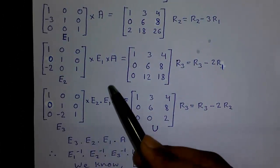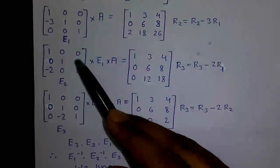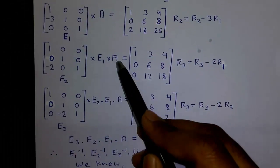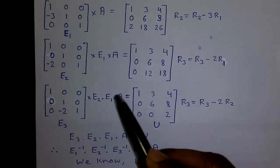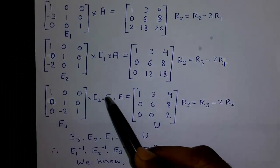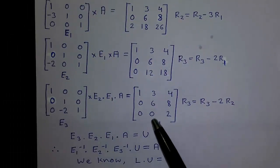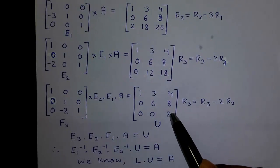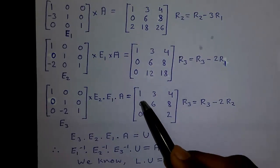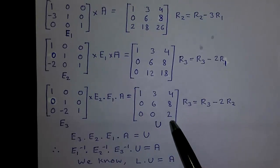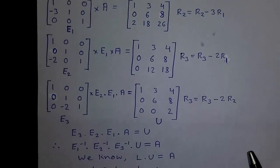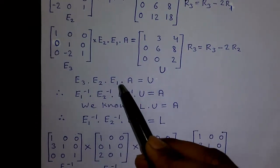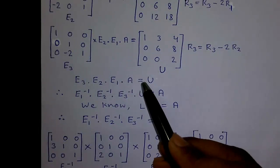After each step we multiply the elementary matrices with A: after step 1 we have E1·A, after step 2 we have E2·E1·A, and after step 3 we have E3·E2·E1·A = U. This is our required upper triangular matrix, where all elements below the diagonal are 0 and all elements sit on the upper triangle.